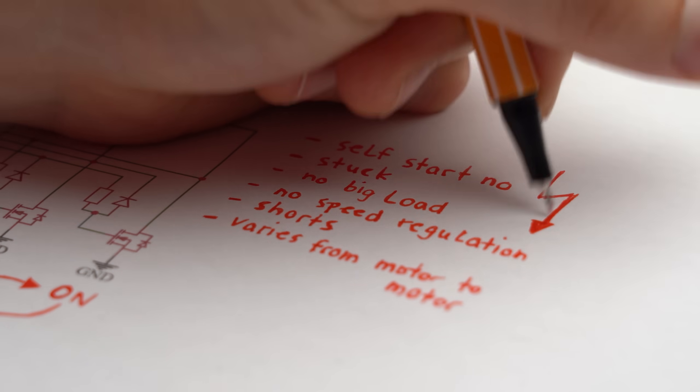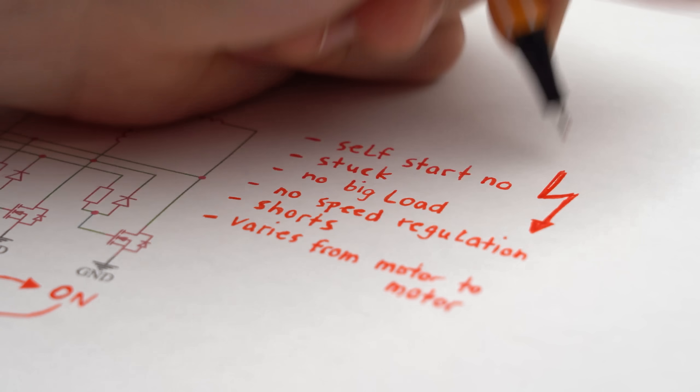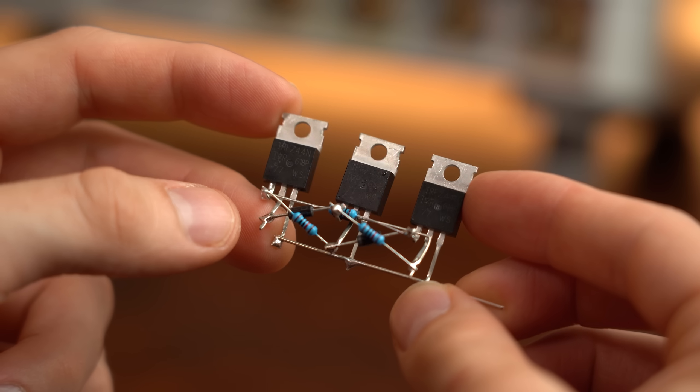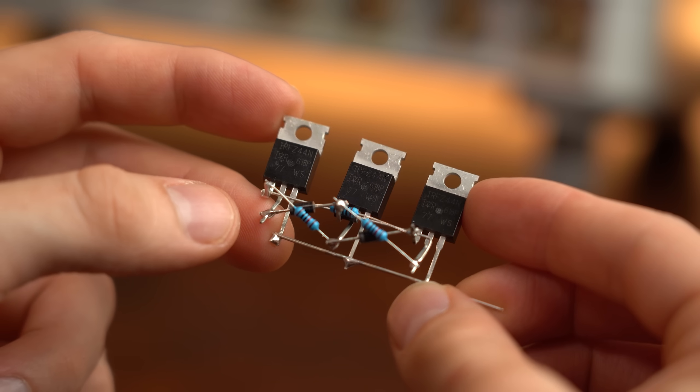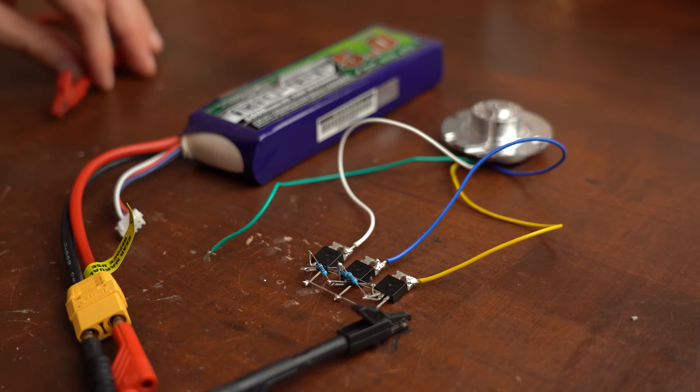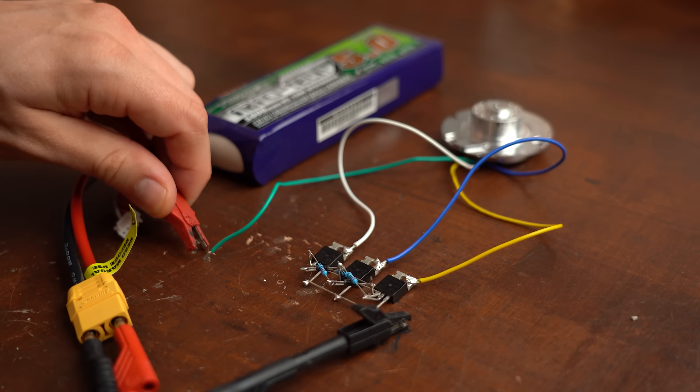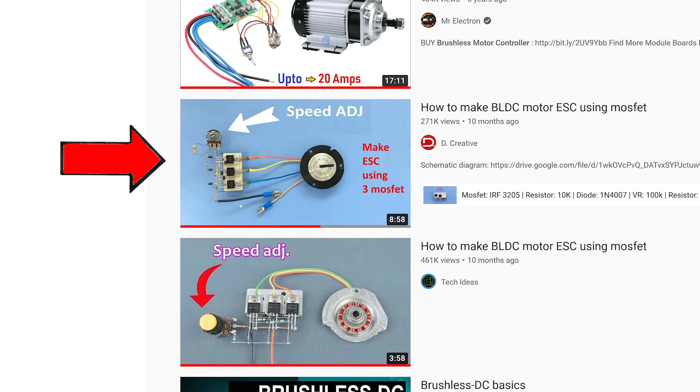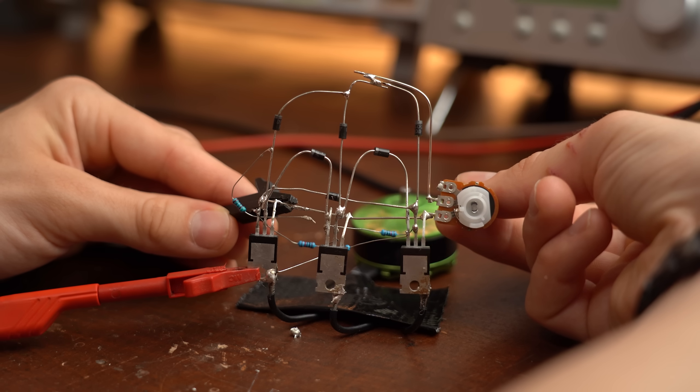So all in all this circuit is more a gimmick than anything else, and I didn't even start complaining about the way too high occurring voltage spikes that will destroy your MOSFETs sooner or later. So please do not connect such a circuit to a battery and do not believe in any of those simple BLDC driver videos because they all hide some information.